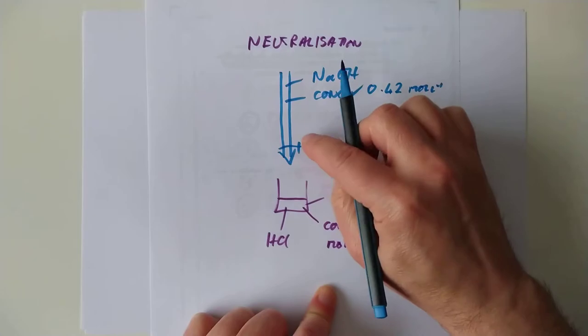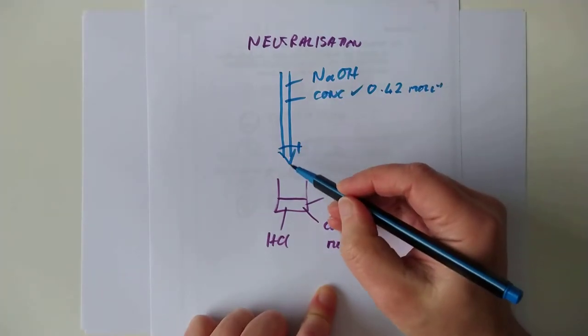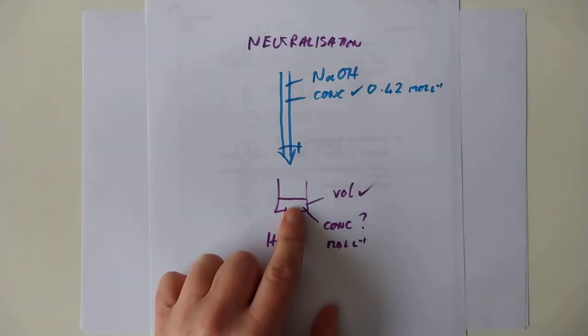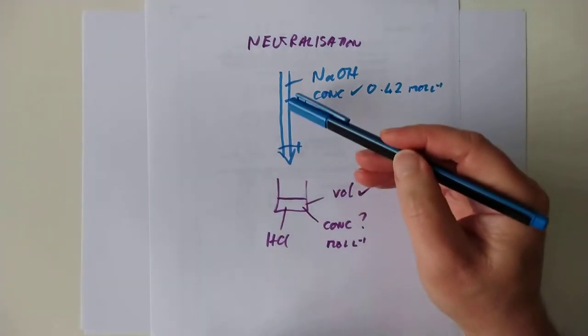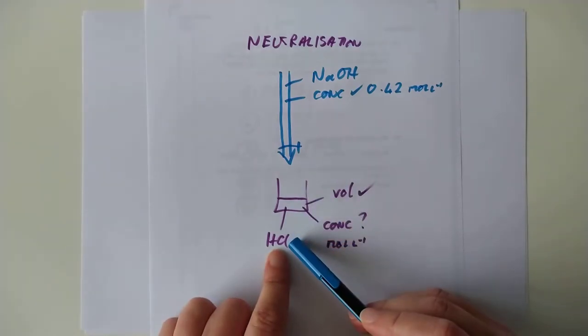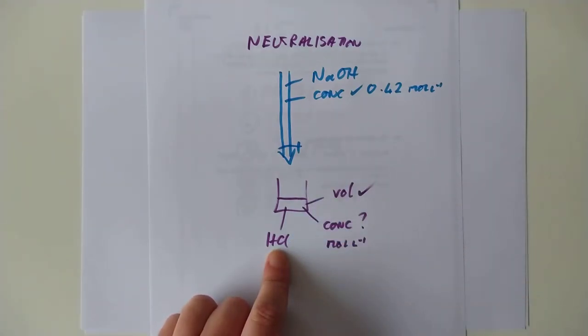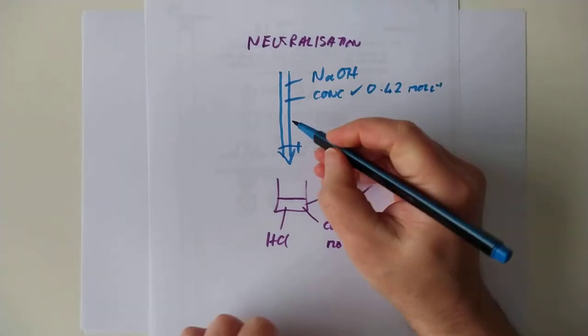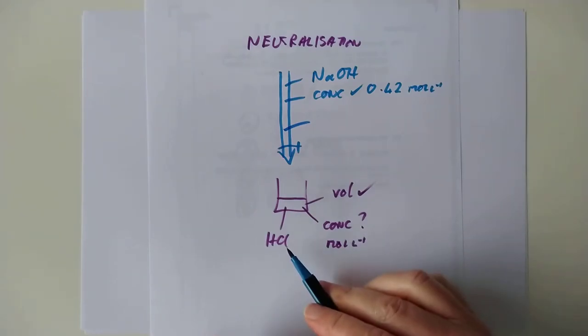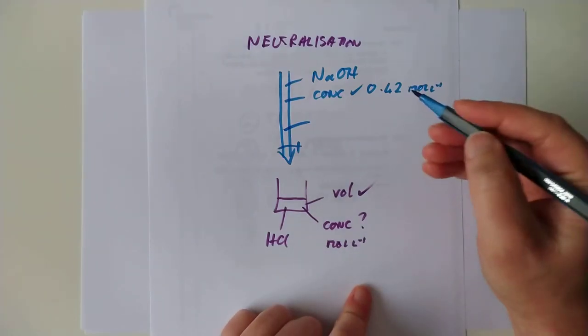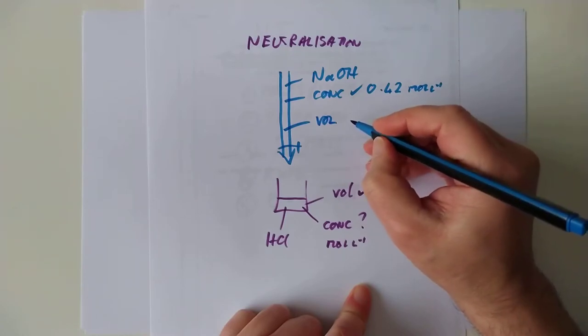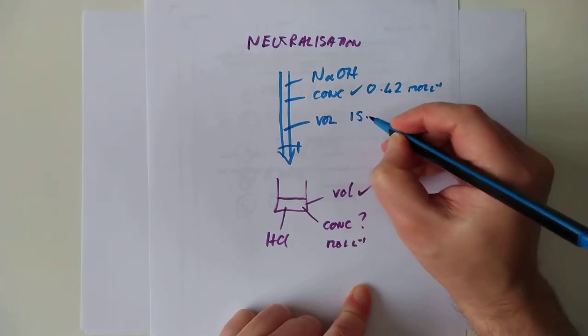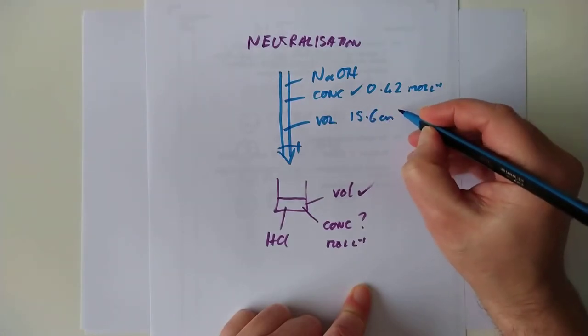And into that hydrochloric acid, we are then dripping a base that we do know the concentration of. So, here is my burette. Here is my burette, and this burette is sodium hydroxide. And we know the concentration of this sodium hydroxide. We know it very precisely. In fact, let's make a number up. Let's call it 0.42 moles per litre.